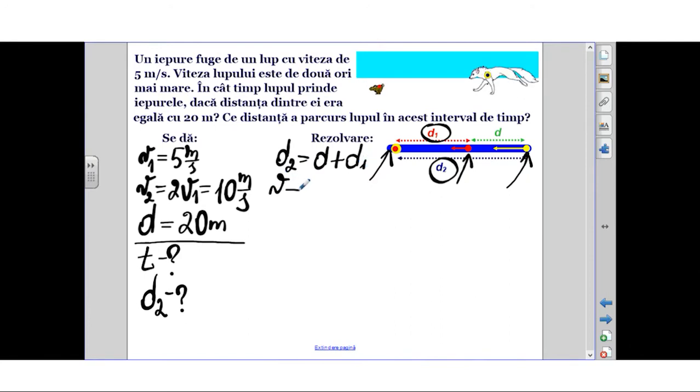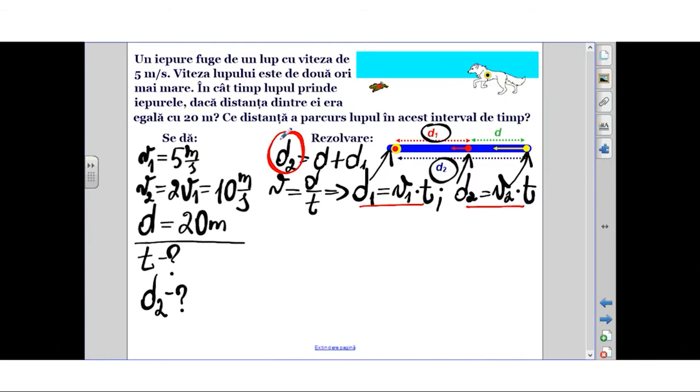If we carefully analyze the schematic representation showing the distance traveled by the rabbit and the distance traveled by the wolf, we observe that the distance traveled by the wolf equals the sum of two distances: the initial distance between them plus the distance traveled by the rabbit.